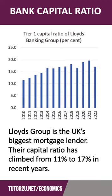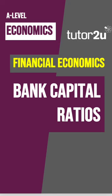Here's a good example. Lloyds Group is Britain's biggest mortgage lender, and as you can see, their capital ratio has climbed from 11% to 17% in recent years.